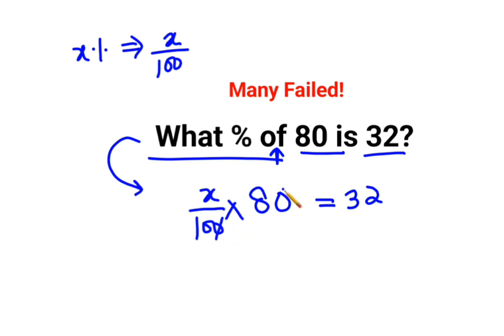So what happens over here? This and this gets cancelled. And then we are left with X multiplied by 8 upon 10 equals to 32.